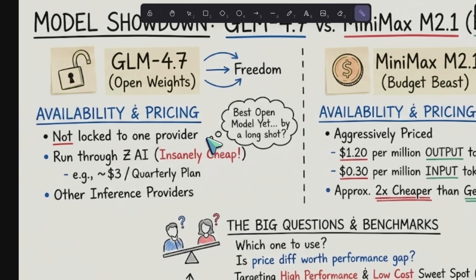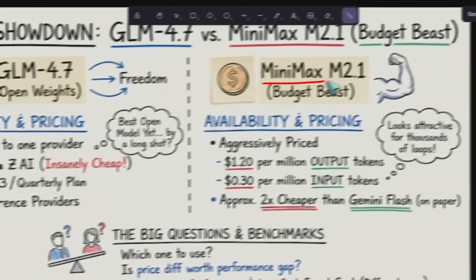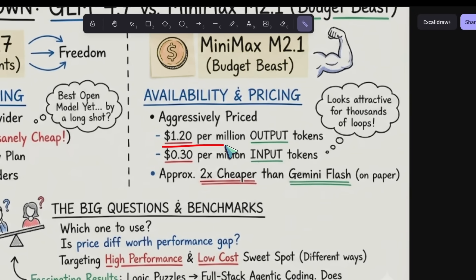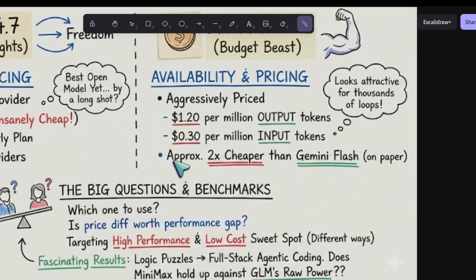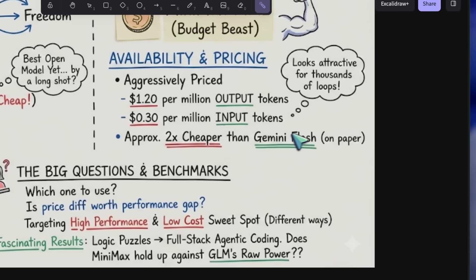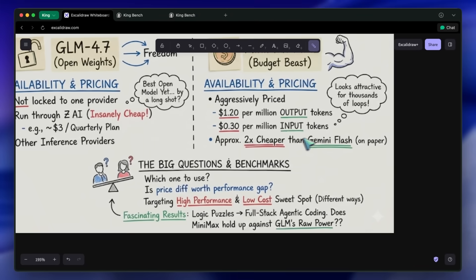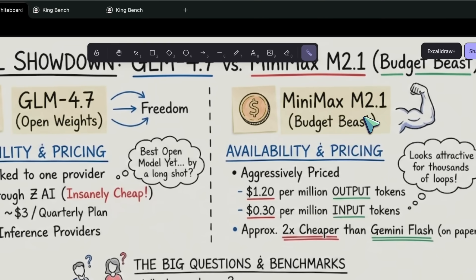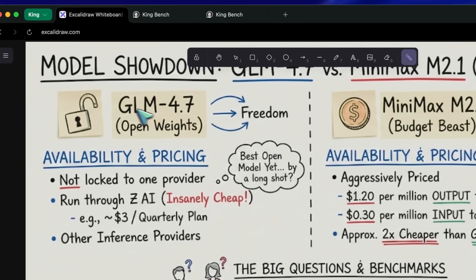On the other hand, we have Minimax M2.1. This thing is priced aggressively. We are talking about $1.20 per million output tokens and $0.30 per million input tokens. To put that in perspective, that is roughly two times cheaper than Gemini Flash on paper. So, if you are building an agent that loops thousands of times, Minimax looks very attractive. But does it actually hold up against the raw power of GLM 4.7?